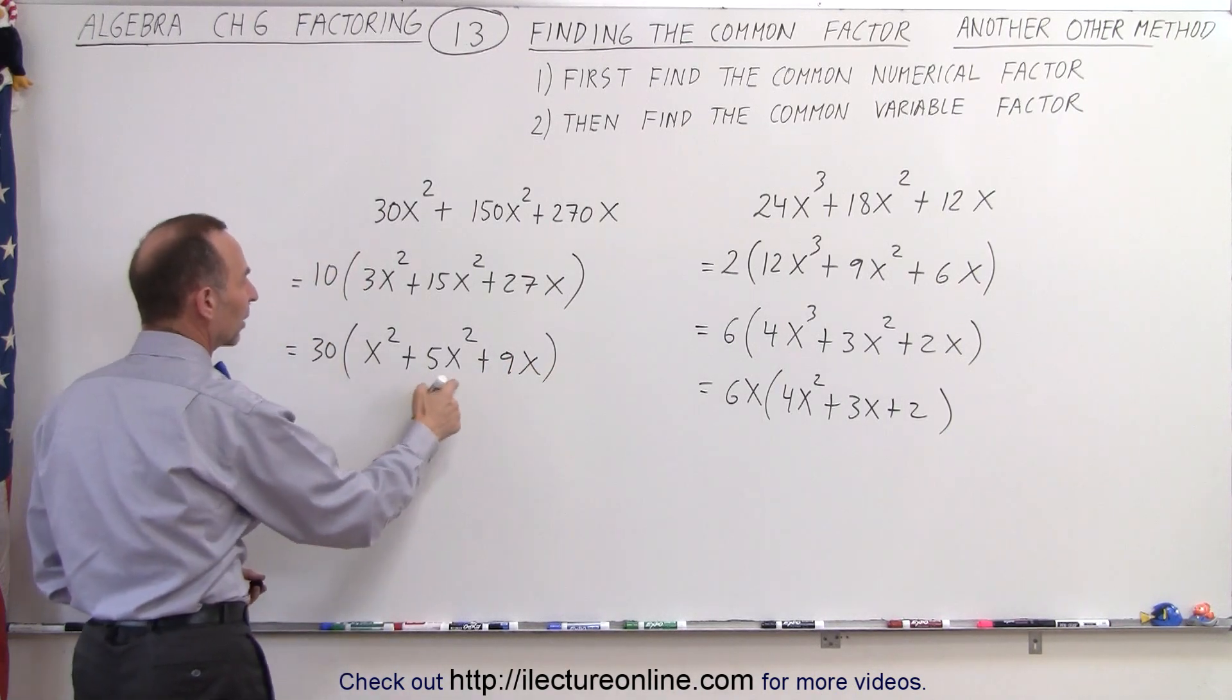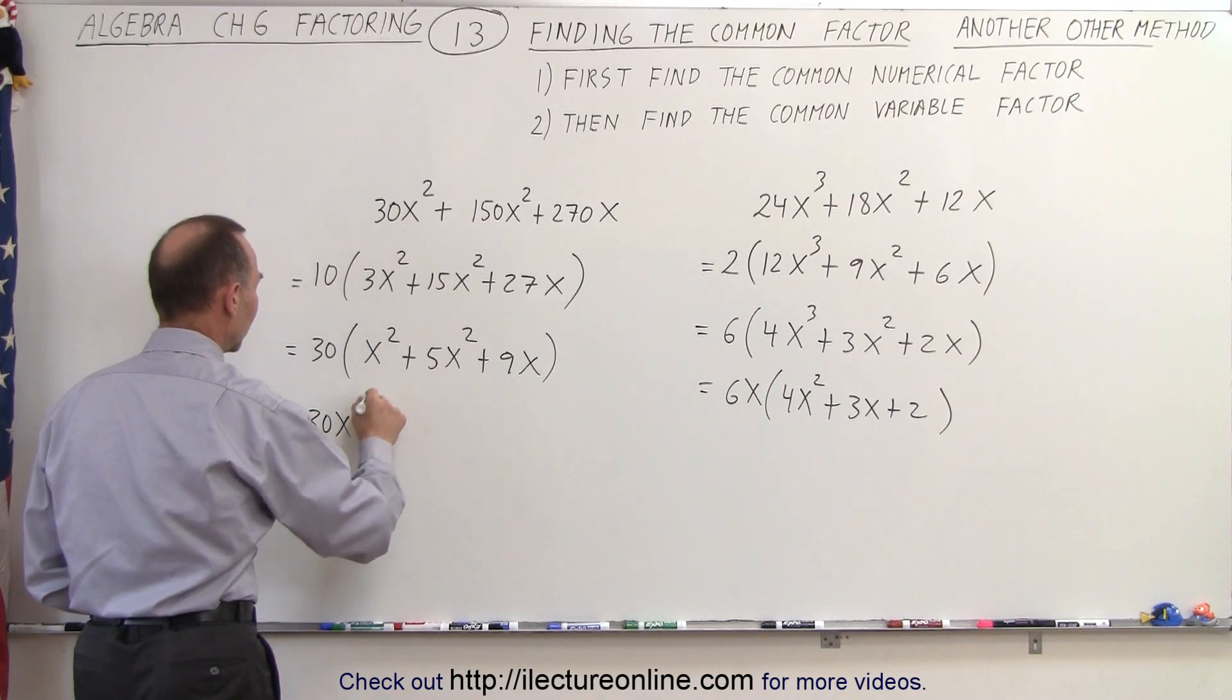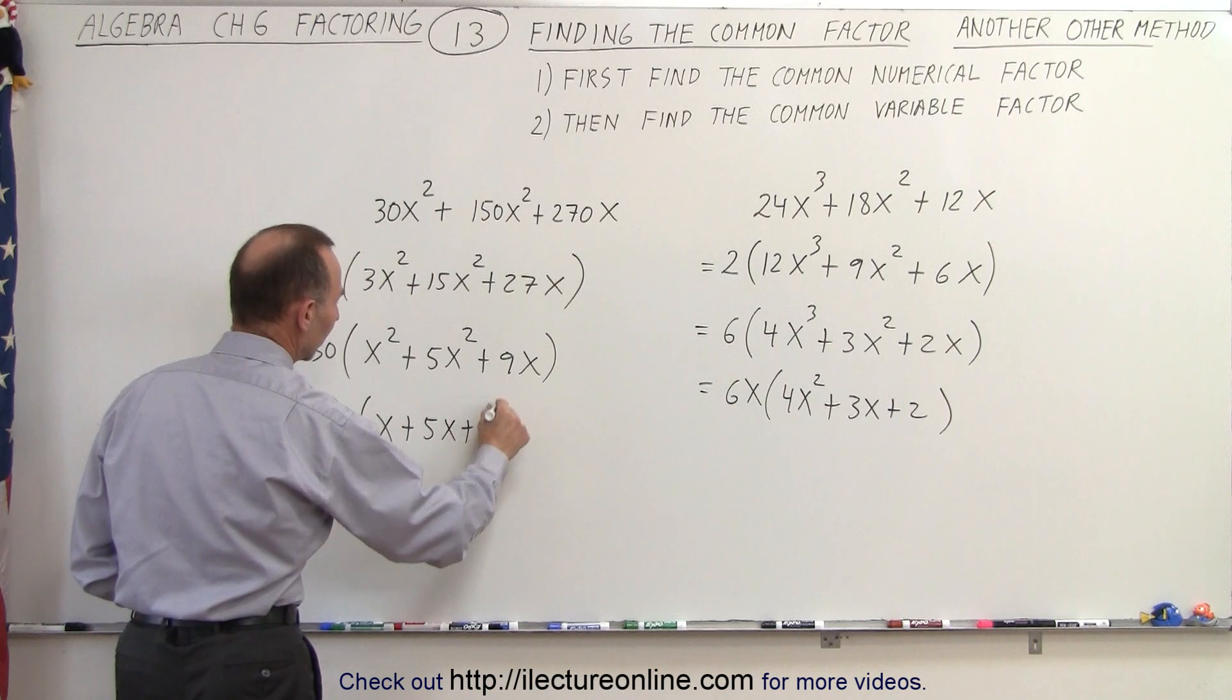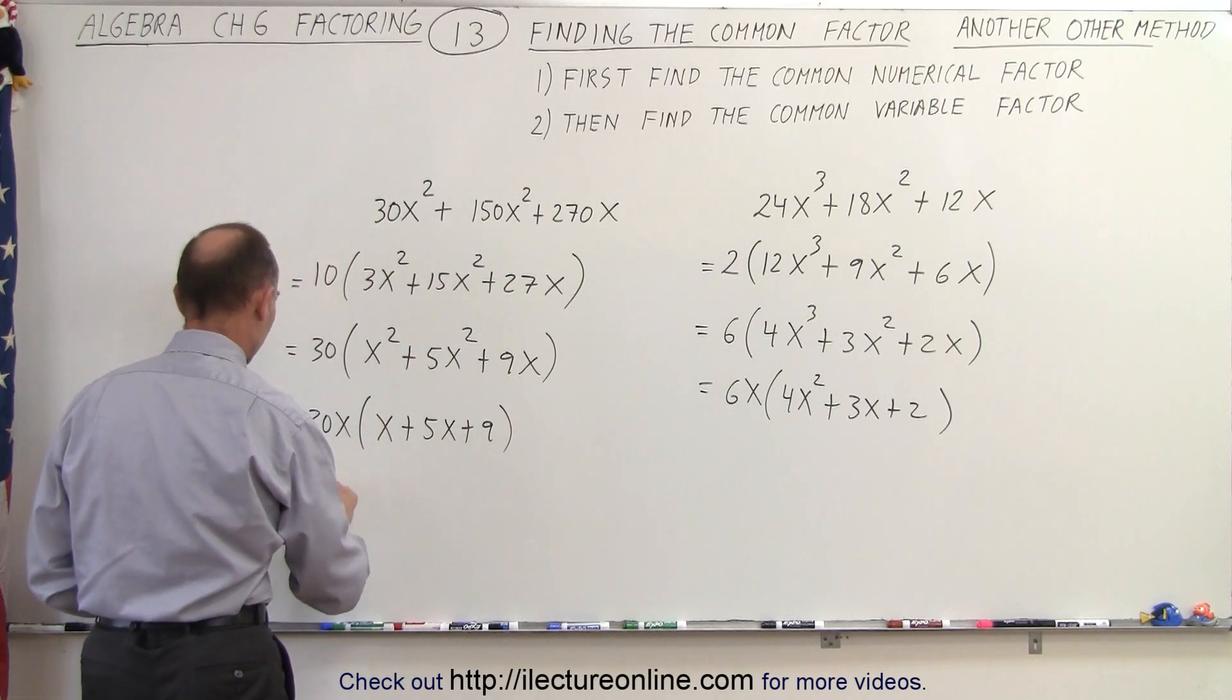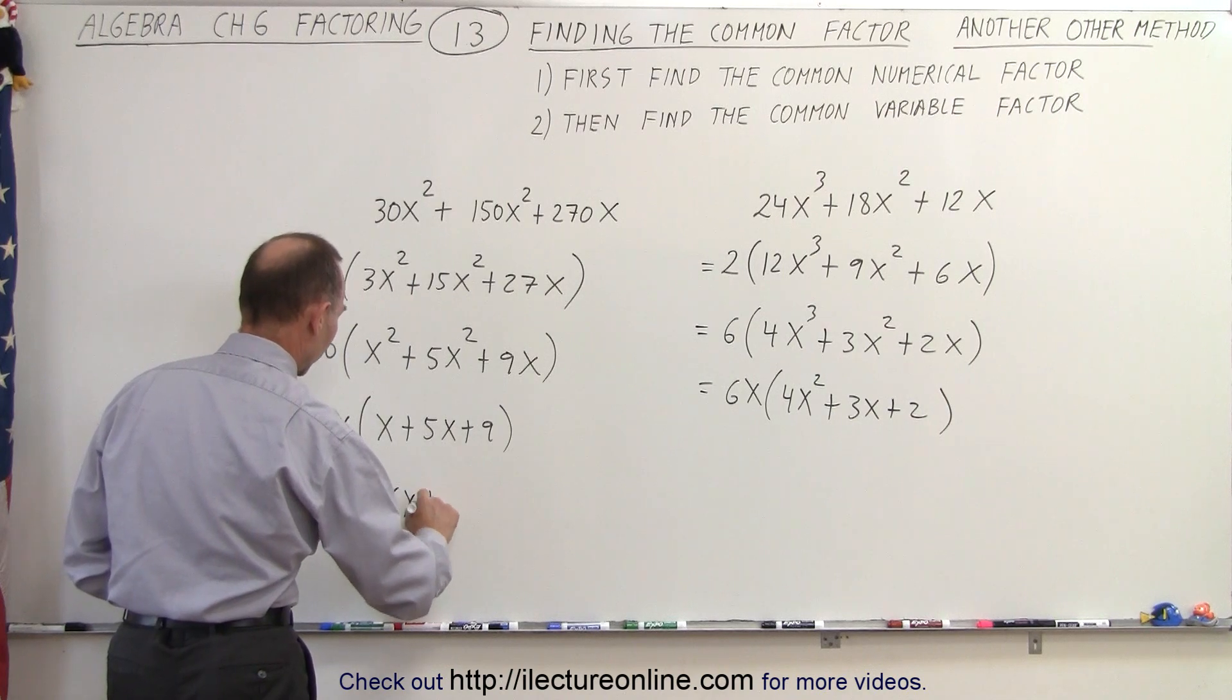Then you can say, well, I can still pull out a common x on all three terms, so this could be 30 times x times (x + 5x + 9). And of course, we could then combine the like terms and say 30x times (6x + 9).